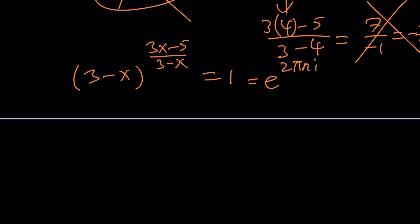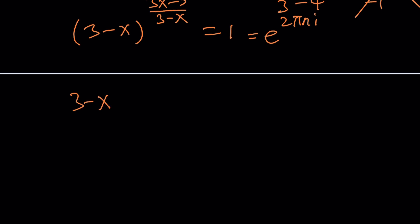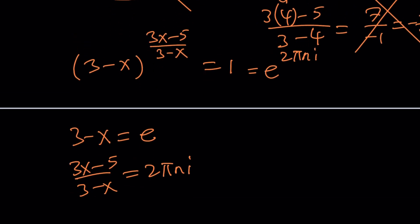What am I talking about? I'm basically saying that is it possible for 3 minus x to be e and 3x minus 5 over 3 minus x to be 2 pi n i, and the answer is no, because for whichever n values you try, this is not going to work. But isn't there another way to approach it, like maybe you take a number and raise it to a power and you get 1? Okay, let's think about it.